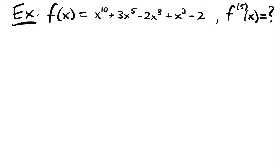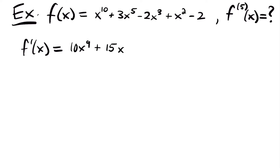Let's start by finding the first derivative. f prime of x is equal to 10 times x to the ninth power, then the derivative of 3x to the fifth is 3 times 5, which is 15, times x to the fourth power, because 5 minus 1 is 4. Then we have negative 2 times 3, which is negative 6, times x to the second power — subtracting 1 from the exponent, so 3 minus 1 is 2 — plus the derivative of x squared, which is just 2x. The derivative of negative 2 is 0, so we don't need to write that. So now we have our first derivative.